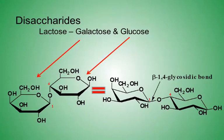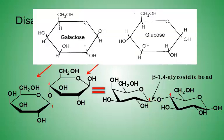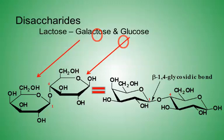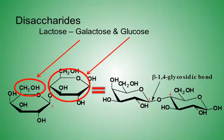Next, we'll look at lactose, which is a disaccharide that has a glycosidic bond between a galactose and a glucose molecule. The glycosidic bond is relative to the galactose, because it is formed between the anomeric carbon of galactose and the OH on the glucose. Because the oxygen is on the same side of the ring as the CH2OH on the galactose, it is a beta glycosidic bond.